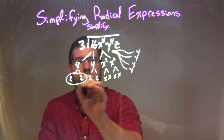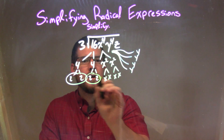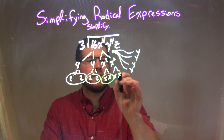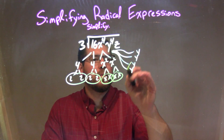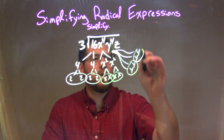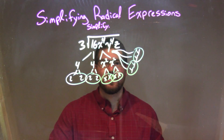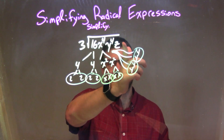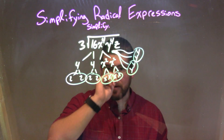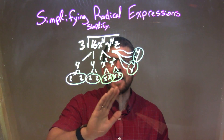So now I'll circle our pairs. A pair of 2s, a pair of xs, and pairs of ys — that's a lot of pairs. The only thing left is it's not a pair of z, and be careful, don't forget that.